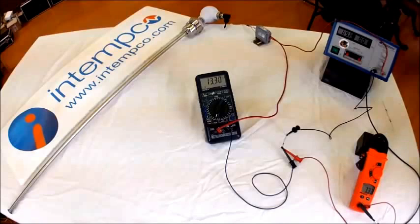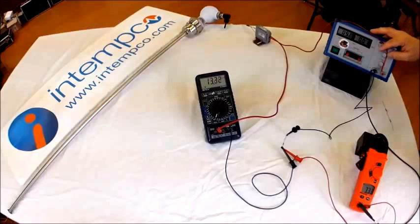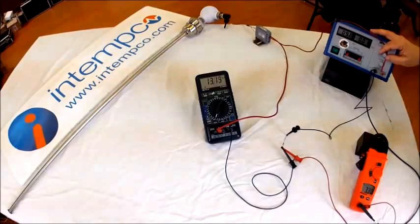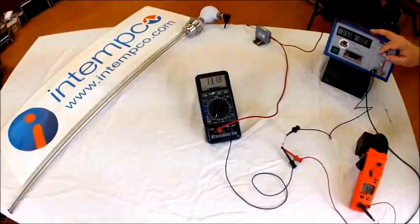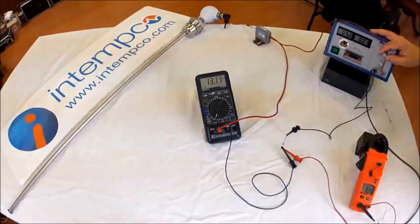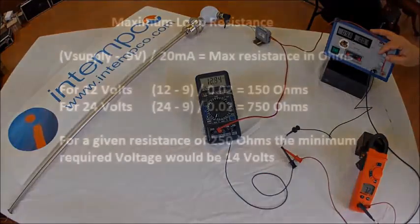Since we are using a 250 ohm resistor, that is within spec at this point. Using this equation and working backwards, the minimum calculated voltage for a 250 ohm resistor would be 14 volts.